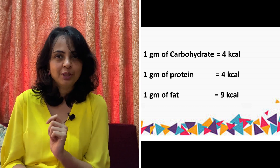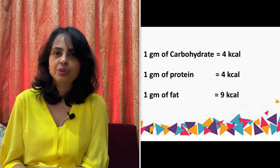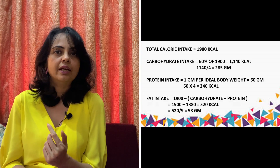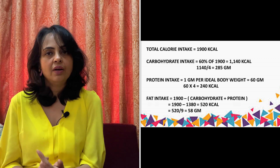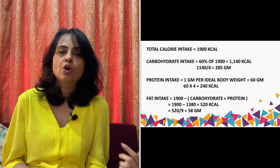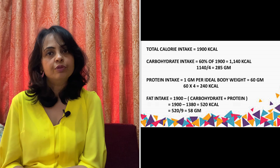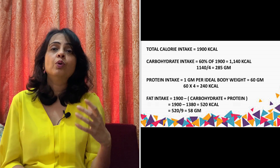I know that I need 1900 kilocalories per day. Remember, 60% of your total calorie intake should come from carbohydrates. So if I calculate 60% of 1900, it comes to 1140 kilocalories. This is the total energy which should be coming from the carbohydrate food group.